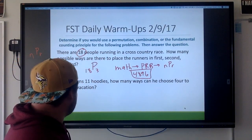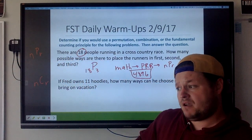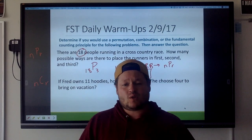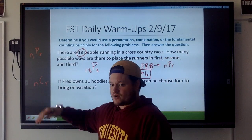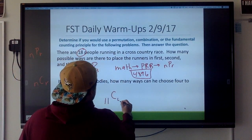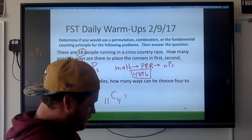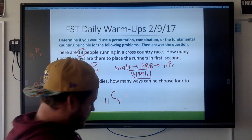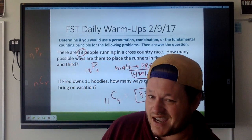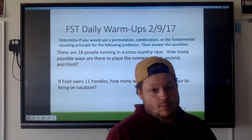So remember that's permutations. Combinations is probably going to be the second one. Let's take a look: if Fred owns 11 hoodies, how many ways can he choose four to bring on vacation? Is it saying that Fred needs to specifically have one for this day, one for this day, one for this day? No, so I know it's going to be a combination. So I'm going to use this nCr thing over here. I know there's 11 hoodies to choose from, it's a combination, and we're choosing four at a time. So go ahead and type that into your calculator: 11 math PRB nCr 4 enter, 330.